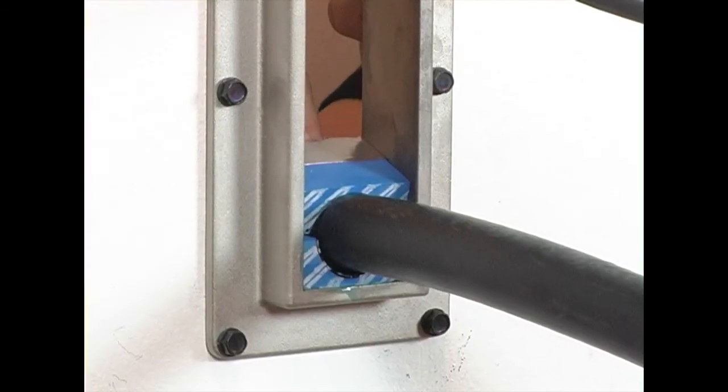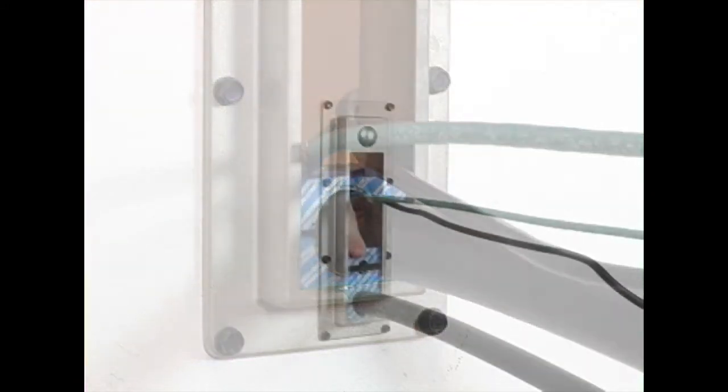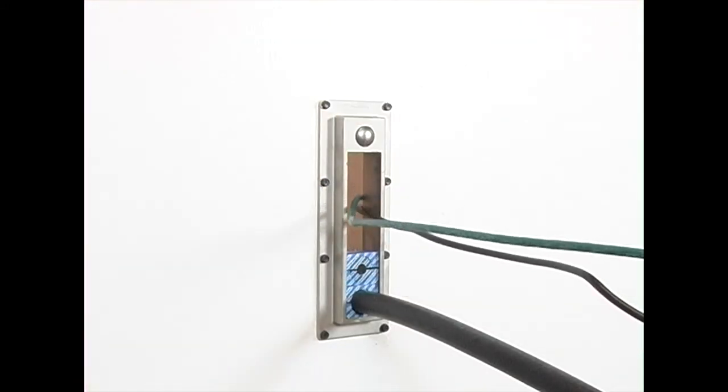Insert the modules from the inside of the enclosure and push them towards the outer edge of the frame. Make sure not to damage the foil as you insert the modules.